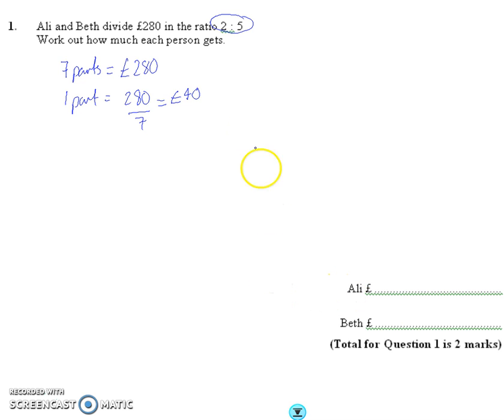For Ali, he gets 2 parts. It's the first number, so it's 2 times 40. So he gets £80.